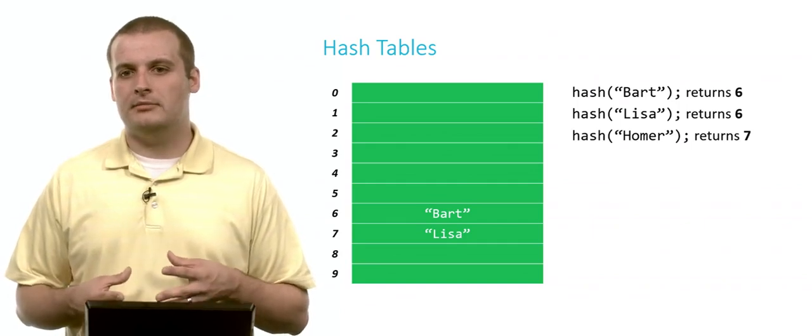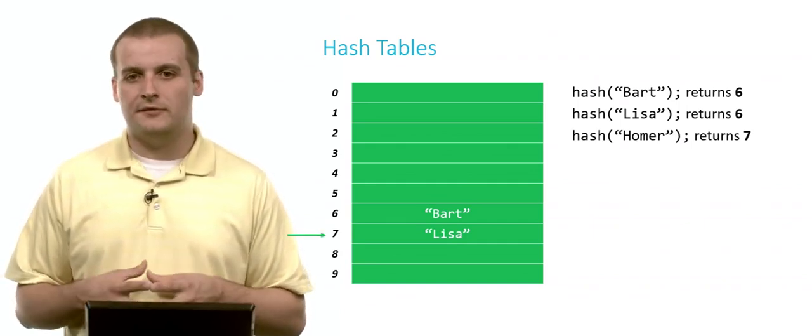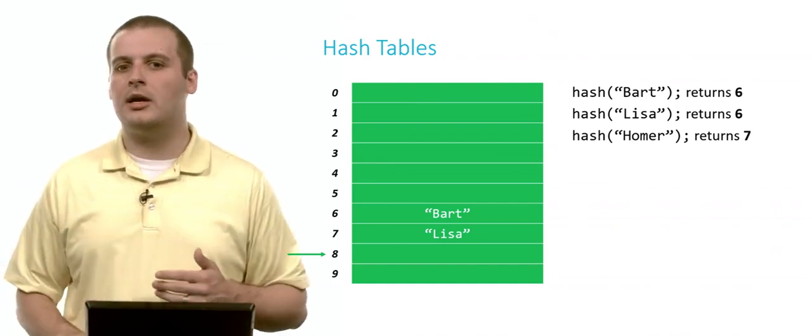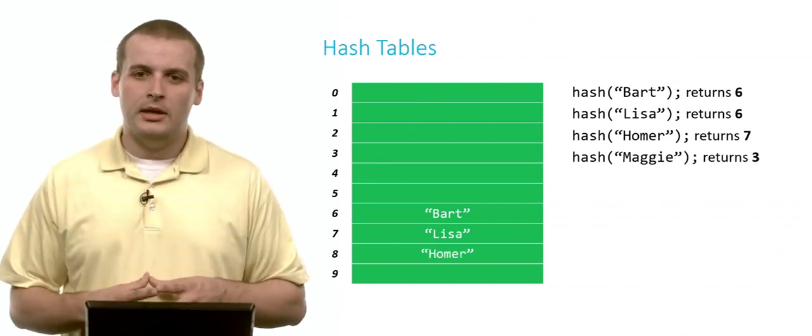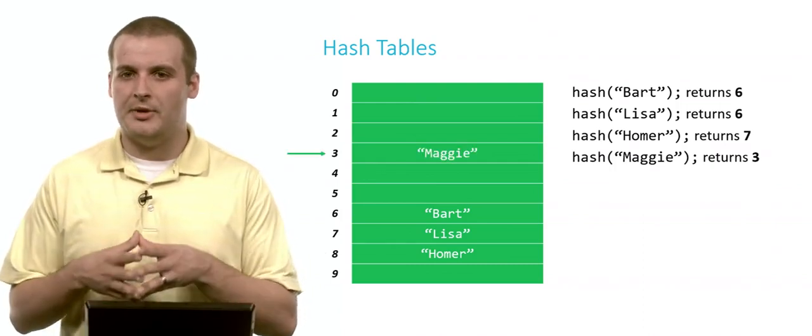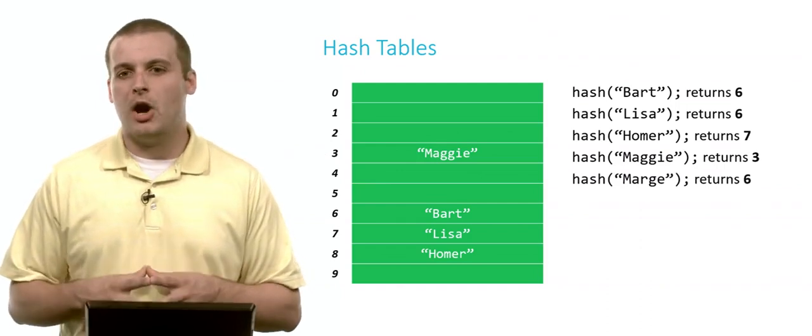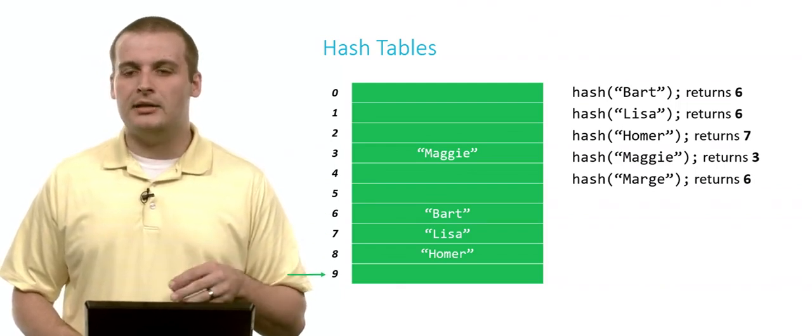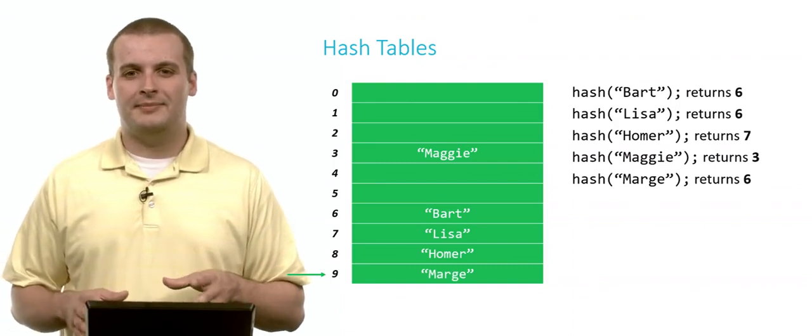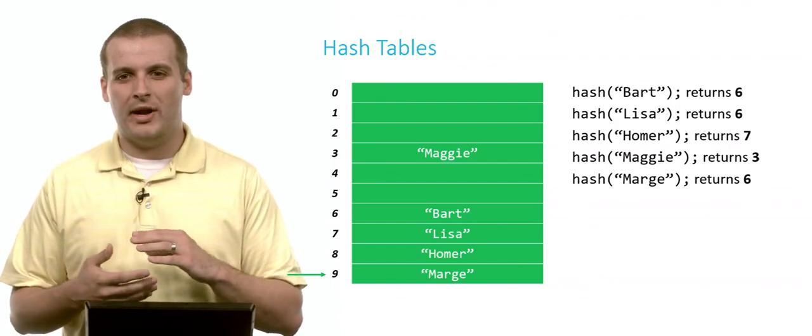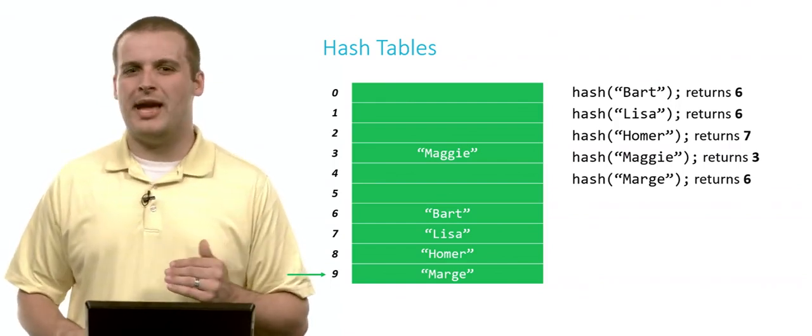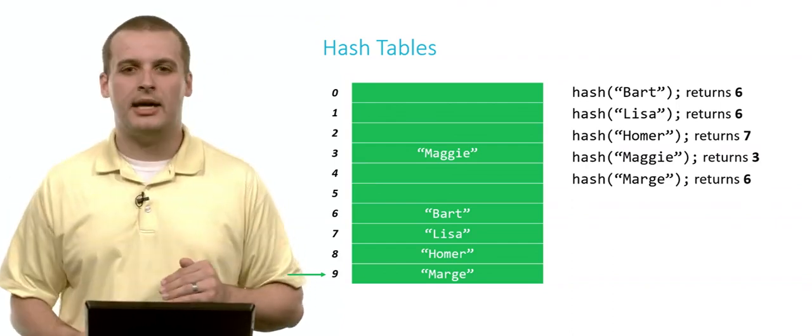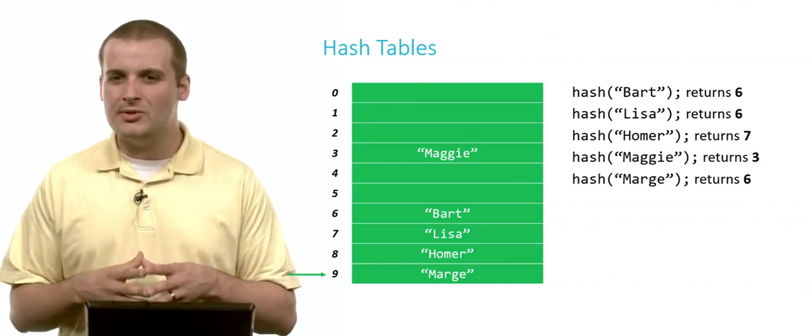Now we hash Homer. And we get 7. Well, we know that 7's full now, so we can't put Homer there. So let's go to 8. Is 8 available? Yeah, and 8's close to 7. So if we have to start searching, we're not going to have to go too far. And so let's put Homer at 8. Now we hash Maggie returns 3. Thank goodness, we're able to just put Maggie there. We don't have to do any sort of probing for that. Now we hash Marge, and Marge also returns 6. Well, 6 is full. 7 is full. 8 is full. 9, all right, thank God. 9 is empty. I can put Marge at 9. Already we can see that we're starting to have this problem where now we're starting to stretch things kind of far away from their hash codes. And that theta of 1, that average case of being constant time, is starting to get a little more, starting to tend a little more towards theta of n. And we're starting to lose that advantage of hash tables.